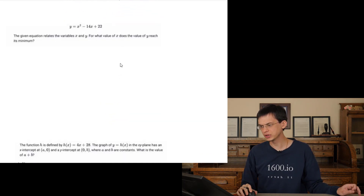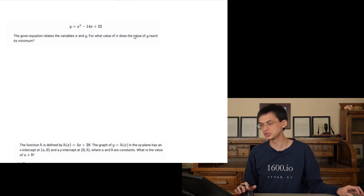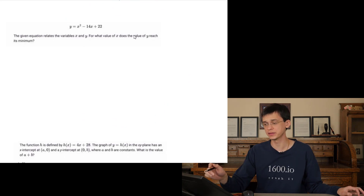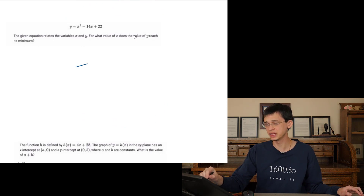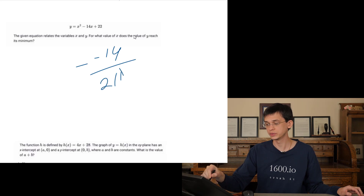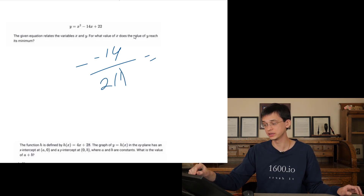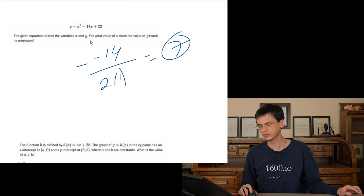We have a parabola. At what value of x does y reach its minimum? We just need to find the x-value of the vertex: negative b over 2a, so negative 14 over 2 times 1. Negative 14 over 2 is 7.